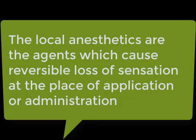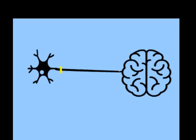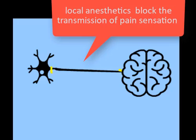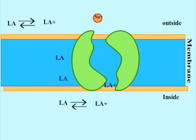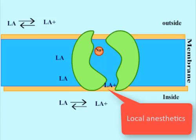Local anesthetics are agents which cause reversible loss of sensation at the place of application or administration. When local anesthetics are injected or applied topically in the target area, they block the transmission of pain sensation from the anesthetized area to the brain by blocking nerve conduction. The nerve impulse conduction is blocked by a reversible inhibition of action potential conduction by binding to the sodium channel and decreasing the nerve membrane permeability to sodium.